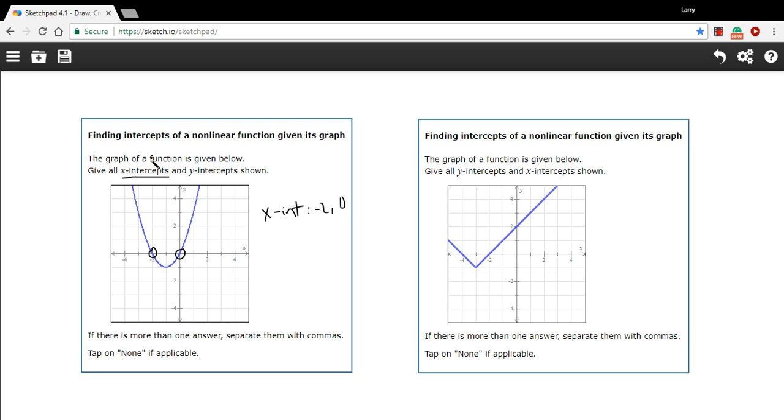And then since these are functions, they're only going to have one y-intercept. If they had more than one y-intercept, that means they'd be crossing the y-axis at two different points. There'd be one x value with two different ys. That means it wouldn't be a function. So there's always going to be only one y-intercept for a function.